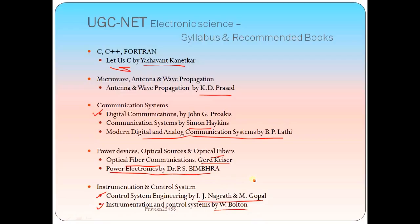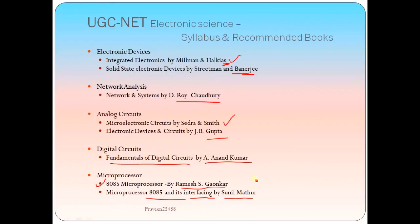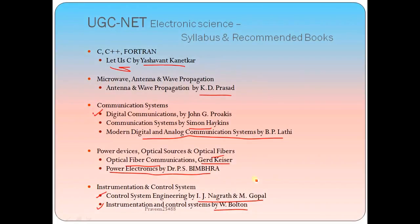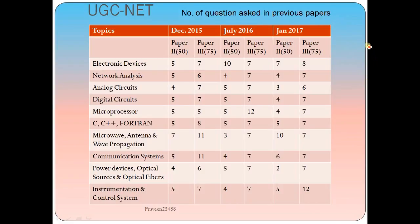There are 10 topics and you can expect 5 questions from each topic in the exam. An analysis of previous papers shows there is not much variation in the number of questions asked from different topics, so all topics are important from an exam point of view. However, I would suggest you mainly focus on these topics: Electronic Devices, Digital Circuits, Microprocessor, Communication Systems, and Instrumentation — these are very important topics for the exam.